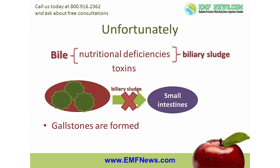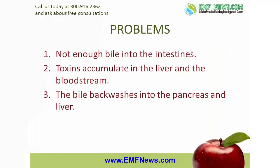Gallstones and biliary sludge disrupt the normal flow of bile, causing three different types of problems. The first set of problems is related to not getting enough bile into the intestines. The second set of problems occurs when toxins, unable to leave the body through the bile, back up and accumulate in the liver and the bloodstream. The third set of problems occurs when the bile, unable to get into the intestines, backwashes into the pancreas and liver.